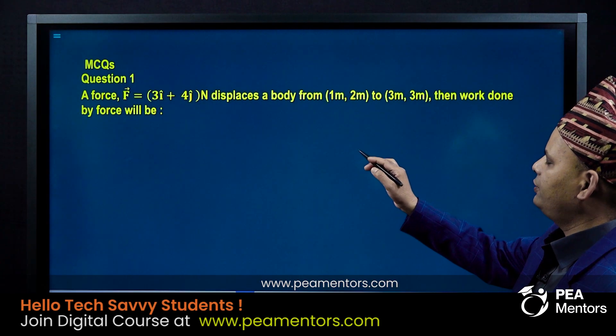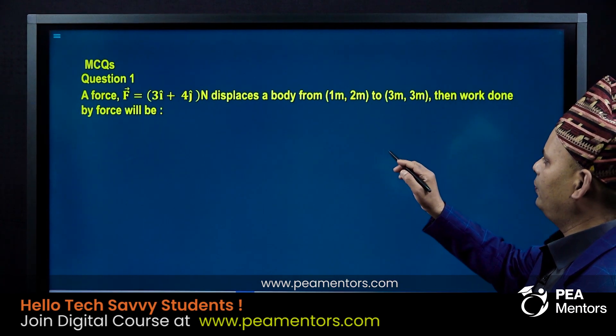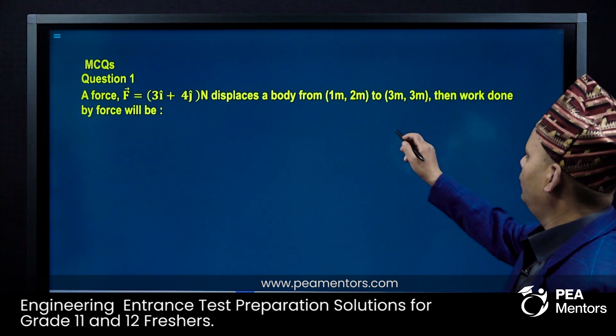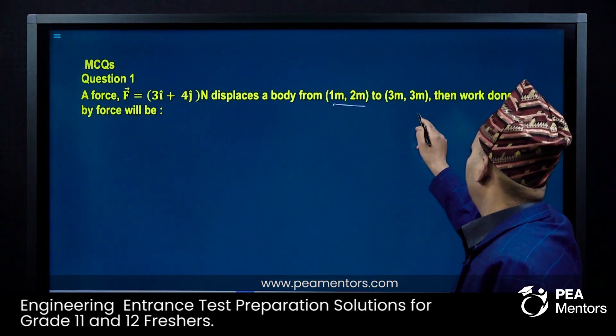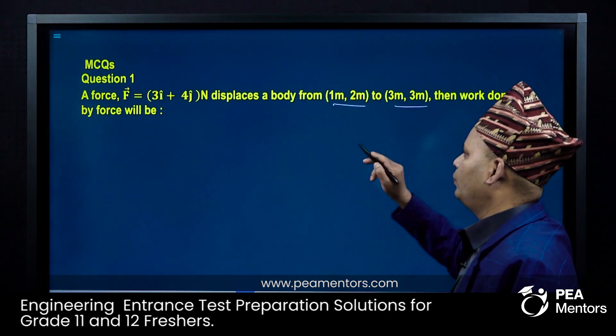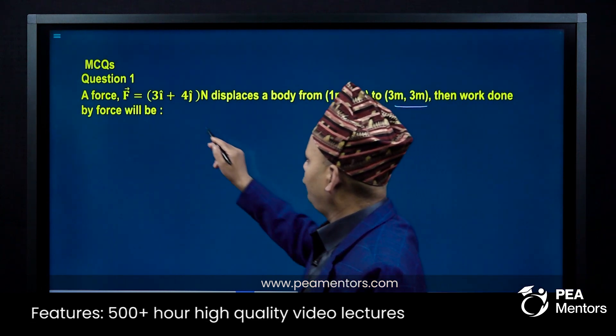A force F vector equals 3i cap plus 4j cap Newton displaces a body from (1 meter, 2 meter) to (3 meter, 3 meter). Then work done by the force will be. This is a constant force problem.